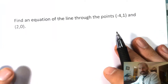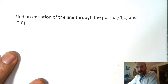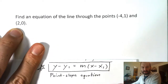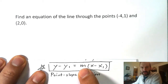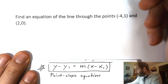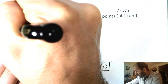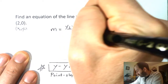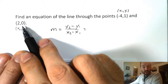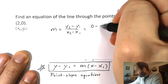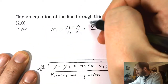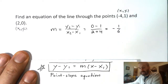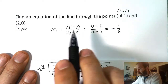Find an equation of the line through the points (negative 4, 1) and (2, 0). We're using the point-slope equation, so we need to know the slope — it's not given to us, but we can find it. We can call this (x1, y1) and this (x2, y2). The slope is y2 minus y1 over x2 minus x1: 0 minus 1 over 2 minus negative 4, which is 2 plus 4. So the slope is negative 1 sixth.